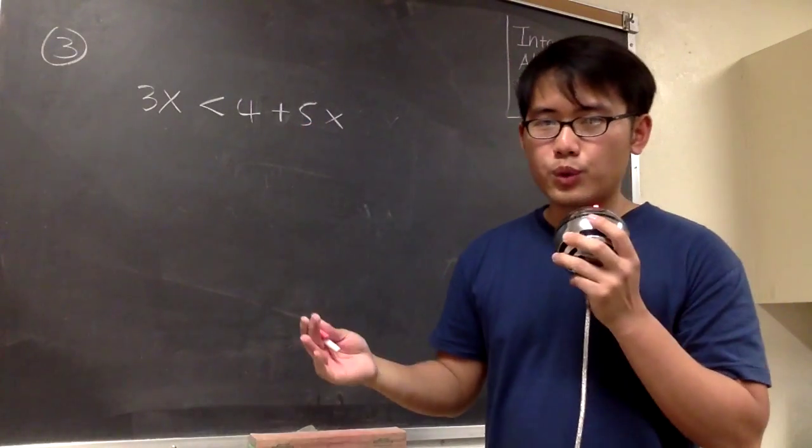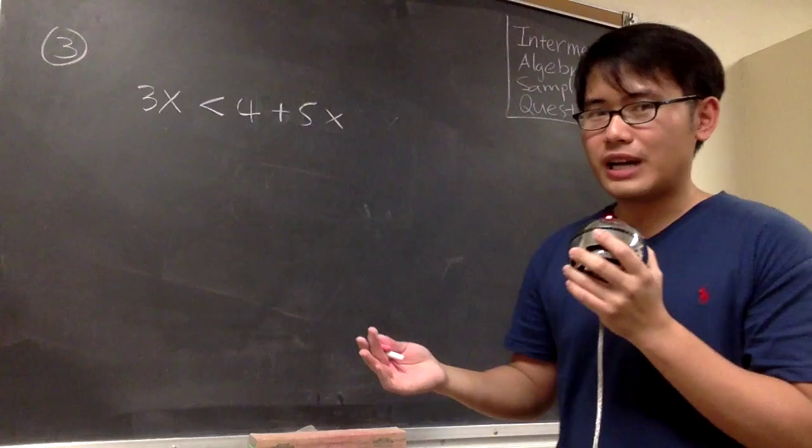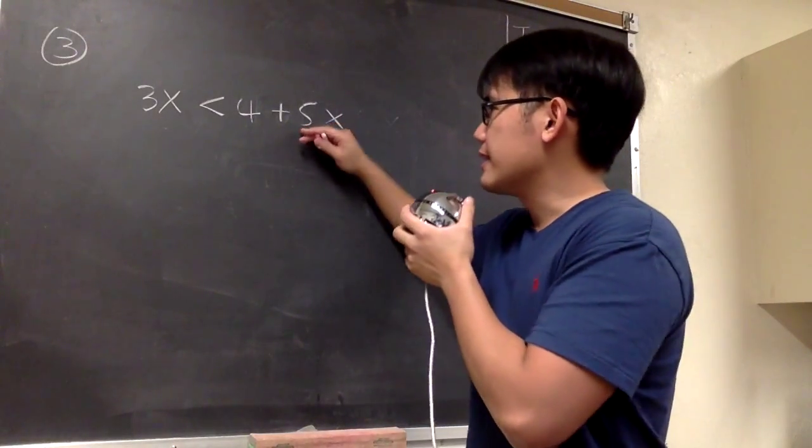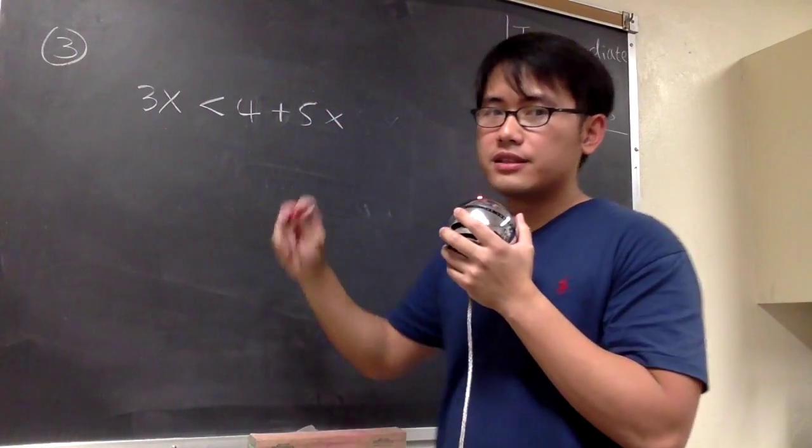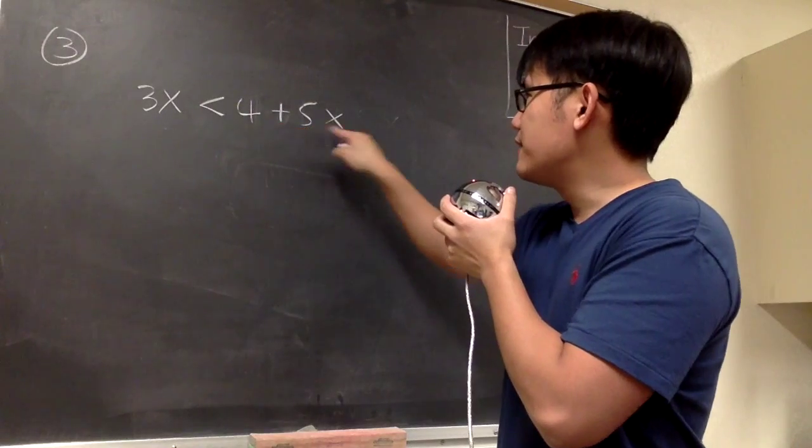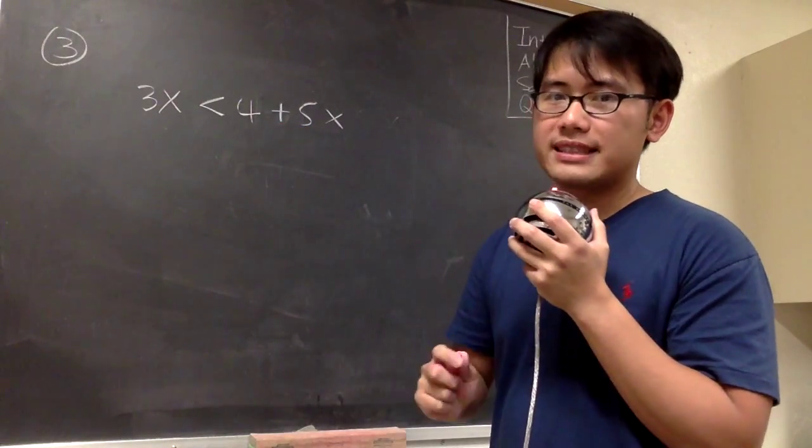Whenever we are solving inequalities, let me just give you a suggestion. This is just a good habit. Let's put all the x onto the left-hand side. Here we have the positive 5x. Let's subtract 5x on both sides.